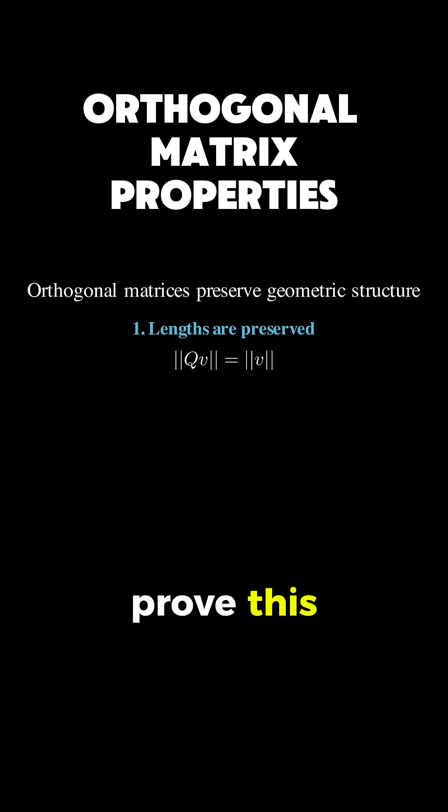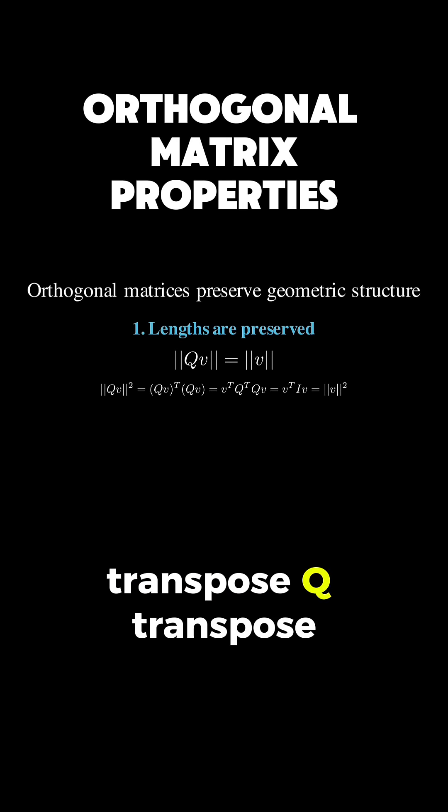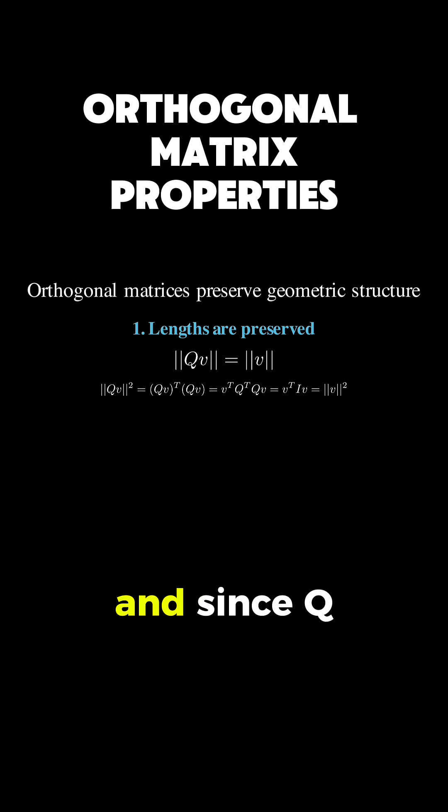We can prove this. The squared length of Qv is (Qv)^T(Qv), which equals v^T Q^T Qv. Since Q^T Q is the identity, this becomes v^T v, which is the squared length of v. So lengths are preserved exactly.